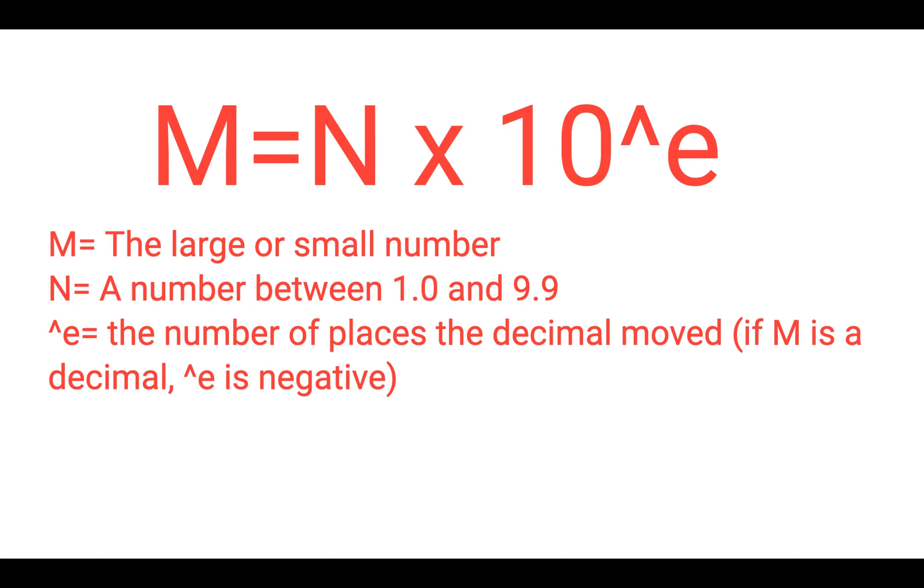M is the really big or really small number. N in scientific notation is always a number between 1.0 and 9.9. There's always a times 10, and then there's an exponent.